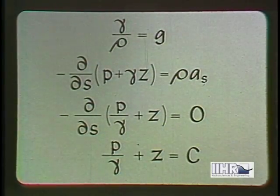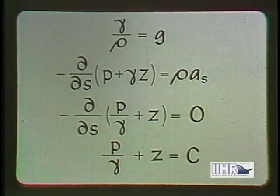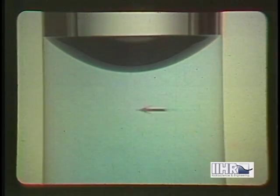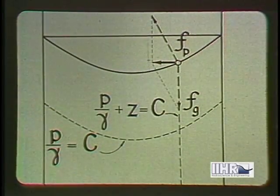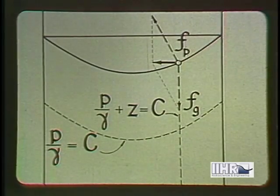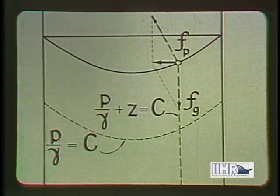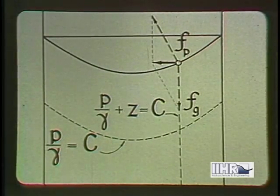This condition is known as hydrostatic pressure distribution. In a cylindrical tank of water that is rotating with a constant angular speed, for example, the pressure distribution is non-hydrostatic radially because of the centripetal acceleration, but hydrostatic vertically because there is no vertical acceleration.